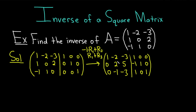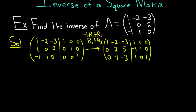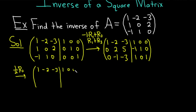Now we have to make this 2 in the second row turn into a 1. To do that, we're going to multiply the second row by 1/2. That's the only thing we're doing in this step. So keeping the first and third rows the same: 1, negative 2, negative 3 | 1, 0, 0. Multiplying the second row by 1/2 gives us 0, 1, 5/2, negative 1/2, 1/2, and 0. Then we keep the third row as is.